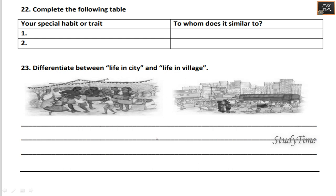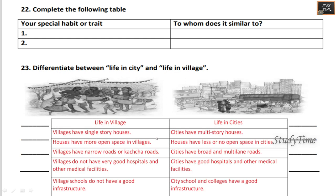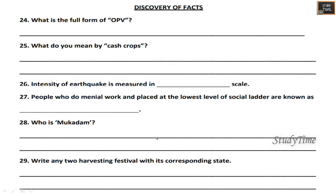Differentiate between village life and city life. Villages have single-storey houses, while cities have multi-storey houses. In villages you will have open space, while in cities there is not much open space. You can write many more differences.